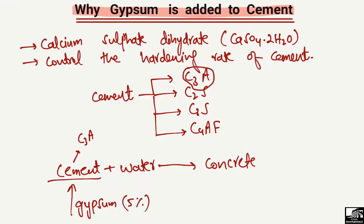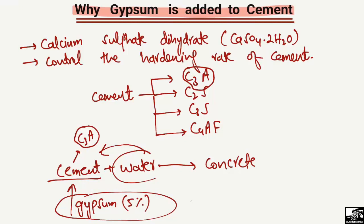By the addition of gypsum, the C3A reacts slowly, and it increases the initial setting time of the cement. When water is added to cement with gypsum, the concrete does not settle down quickly, giving us more time to place the concrete around structural members. To increase the setting time, we use five percent gypsum and ninety-five percent clinker in cement.